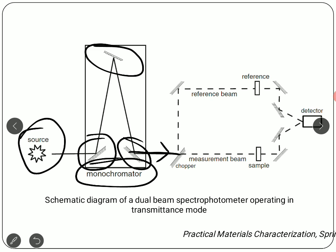Next we have a chopper. Even without the sample, other components like mirrors and the monochromator can create additional signals not coming from the sample. So we chop the signal — dividing it into two parts. One part goes to a reference, which might be an empty cuvette or sample holder. The sample beam includes contributions from the cuvette, and both signals are fed into the detector.